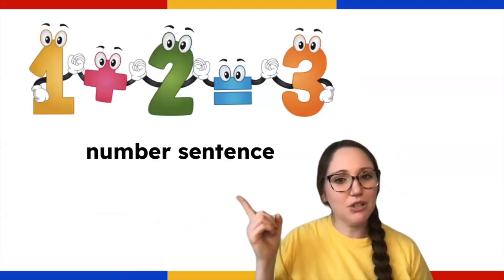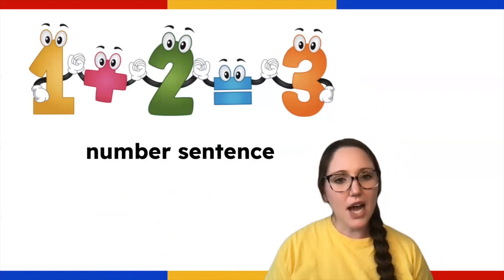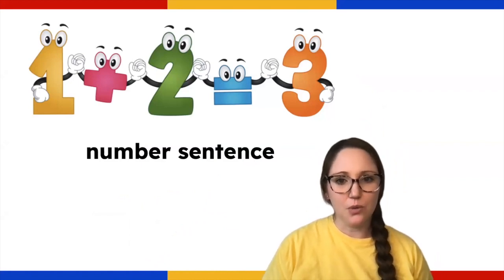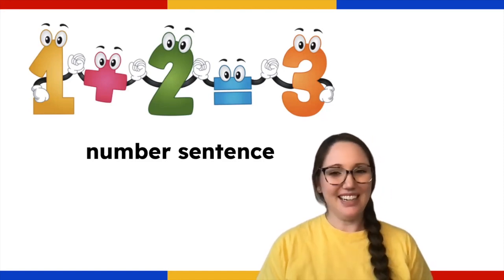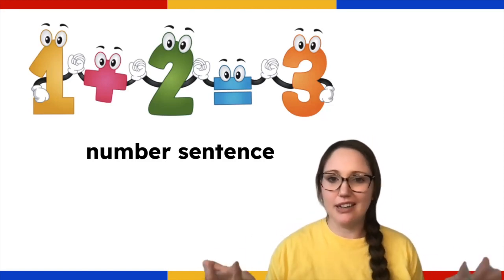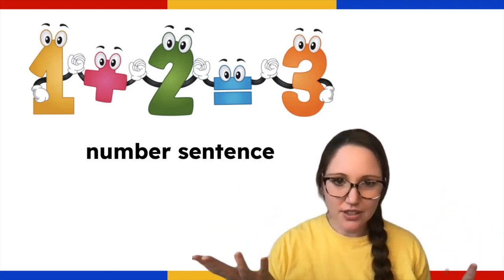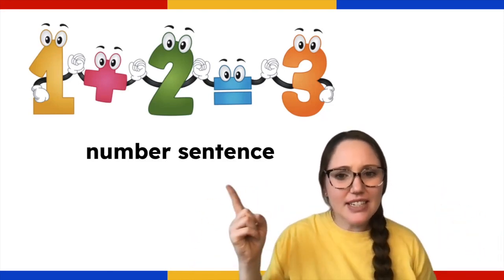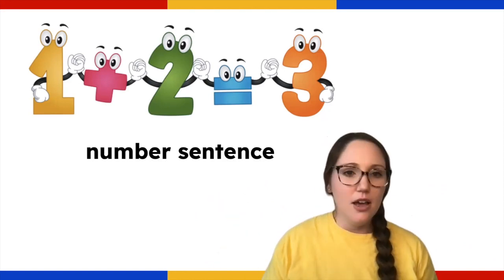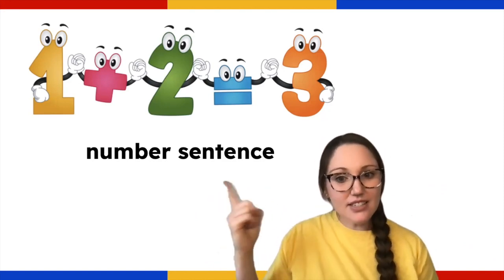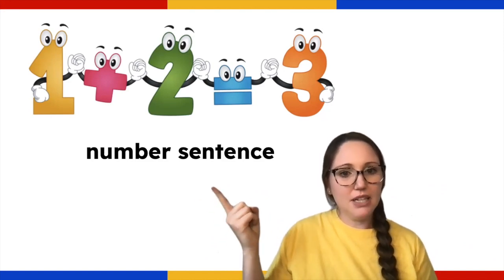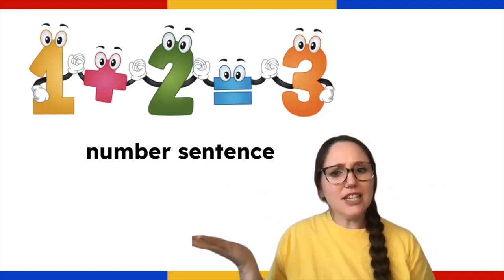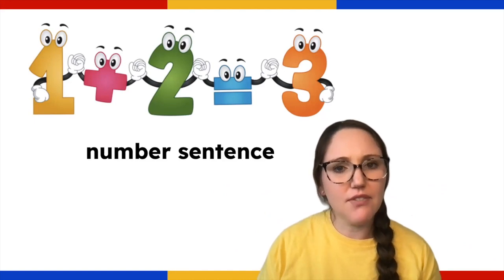This is a number sentence: one plus two equals three. It's a sentence of numbers. I know it's silly because it doesn't have a period, and it doesn't have words, and it doesn't even have letters. But this is a number sentence, because in math, this is how we solve problems. One plus two equals three.